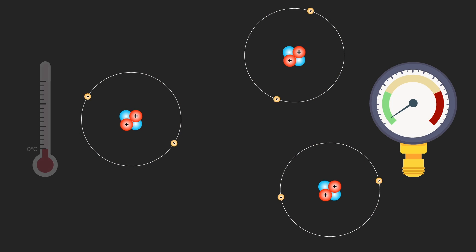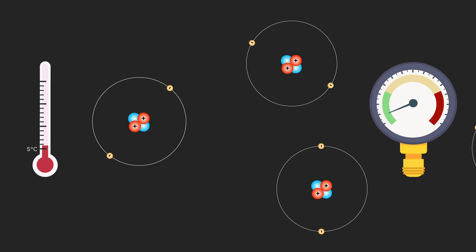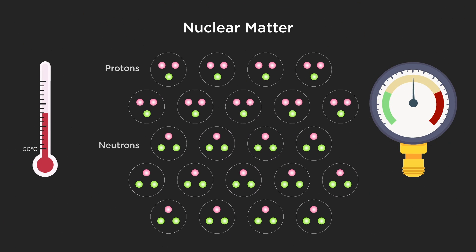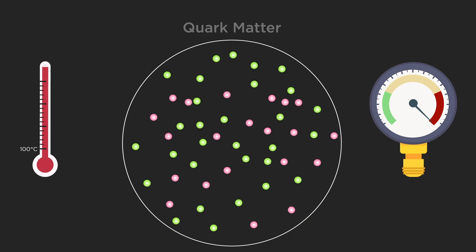Under extreme conditions this can change. As matter is compressed it transitions to matter composed of atomic nuclei. Atomic nuclei consist of sub-nuclear particles, quarks.